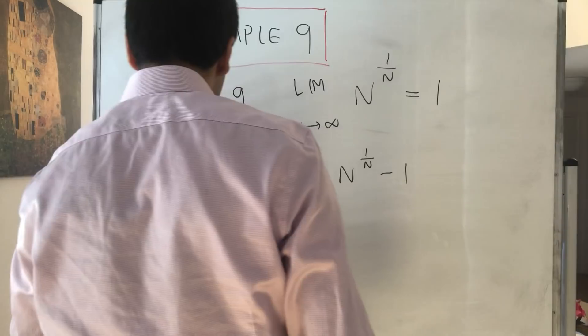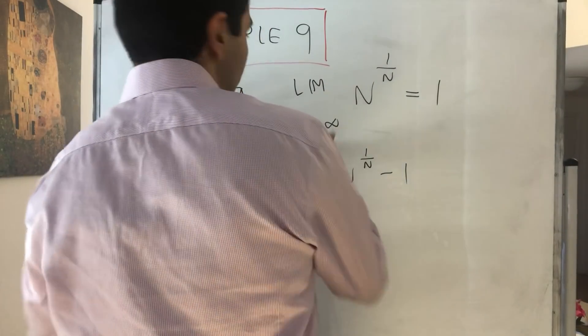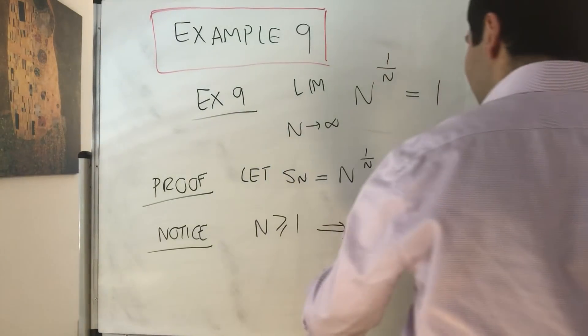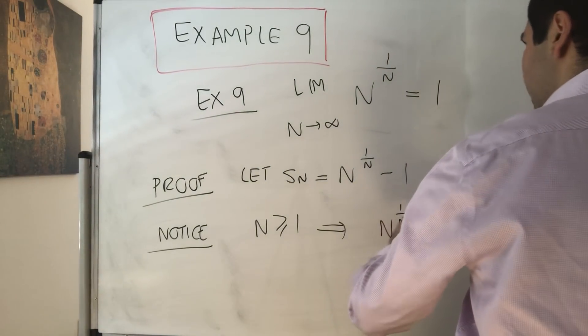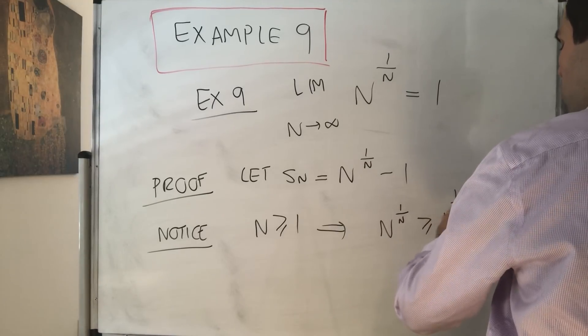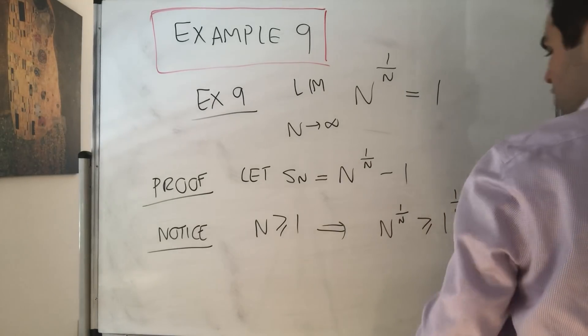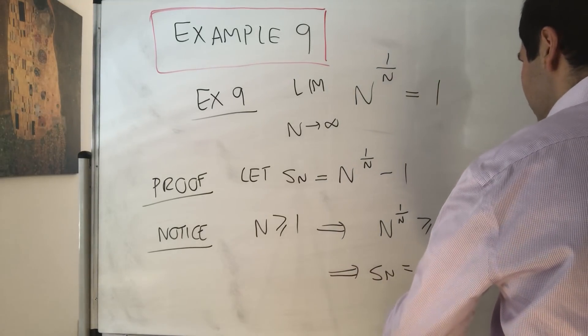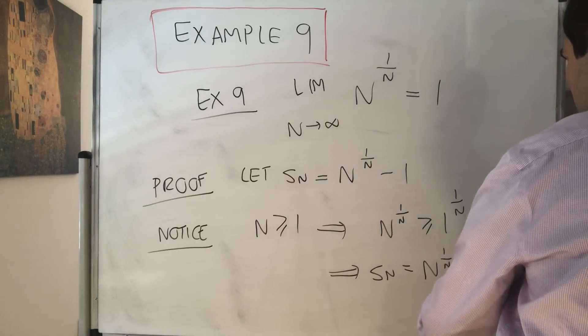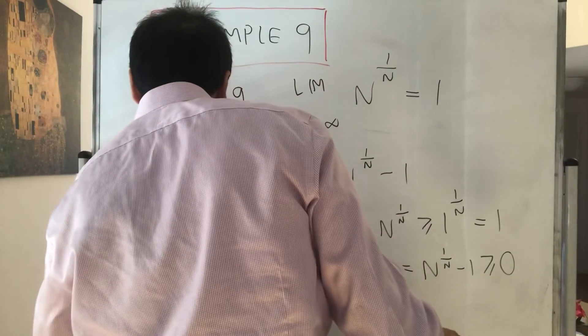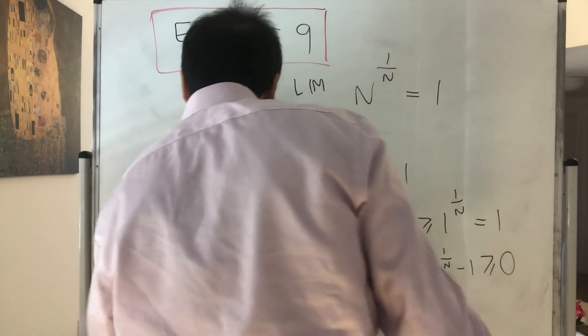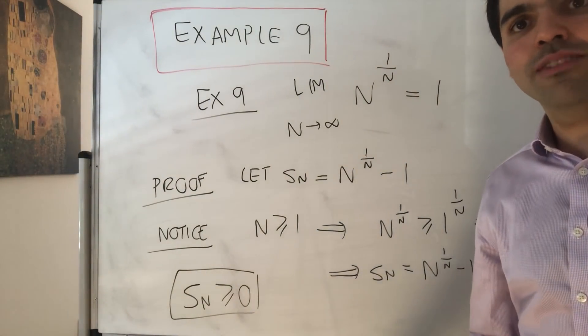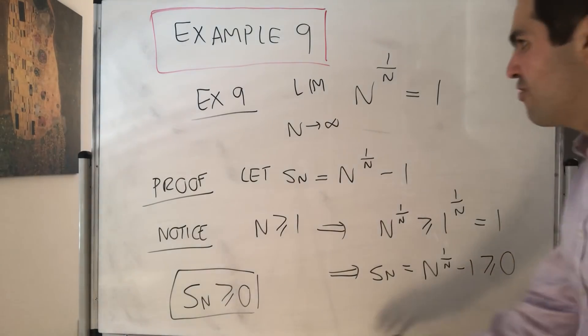Now notice well n is a natural number so n is greater or equal to 1. So if you take nth roots you get n to the 1 over n is greater or equal to 1 over 1 to the 1 over n which is 1. So in particular S_n which is the difference between the two is non-negative. So on the one hand S_n is greater or equal to zero. So we found our lower function and all that's left to do is to find our upper function.